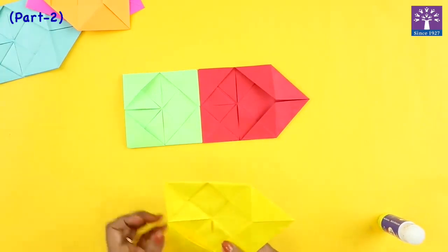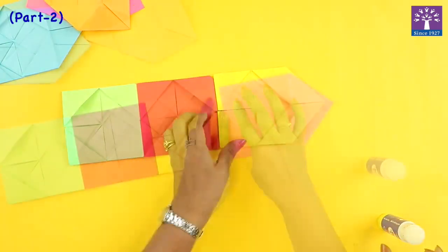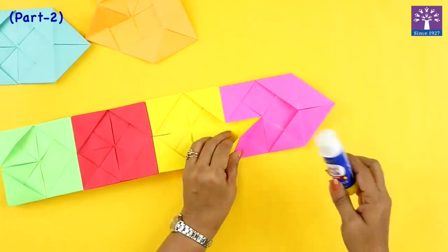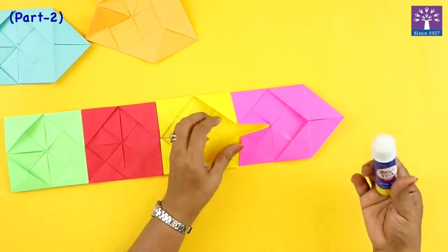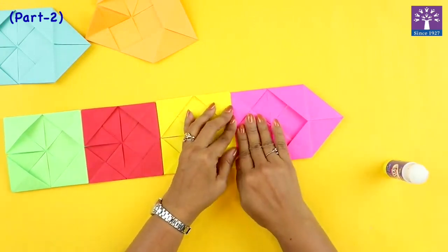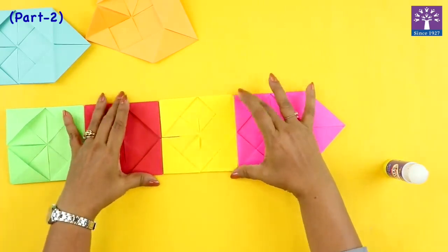So we will continue with the same technique. Since all these squares are equal and it is folded, and this paper is also folded equally, you will see that it is fixing very properly.